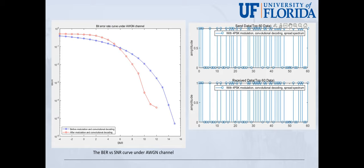This figure, the left figure shows the BER curve in the AWGN channel. We can see that BER will decrease when SNR increases. It also shows both BER curves before and after the QPSK modulation and the convolutional decoding. The last figure shows the top 60 data, the sent data and the received data, when I use the QPSK modulation and the convolutional decoding and spread spectrum.